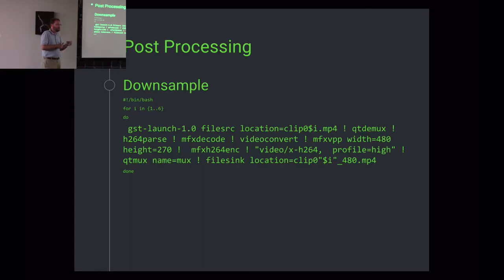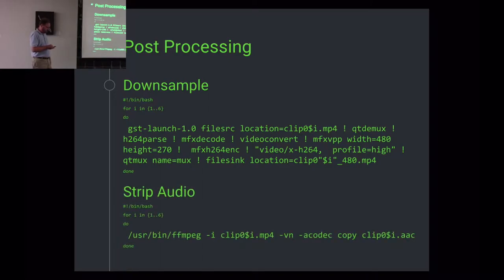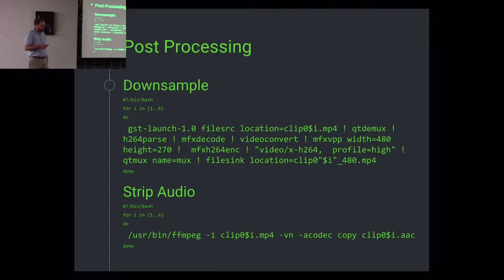I throw it in a shell script, get coffee, and now I have all my clips arranged with the speaker downsampled. CPUs these days come with X264 hardware — there's an actual H.264 encoder that comes on your Intel CPU, not just general-purpose graphics hardware. I also use FFmpeg to strip the audio, again using a shell script. There's a reason I'm going to strip the audio.